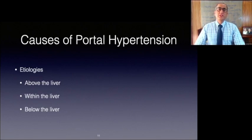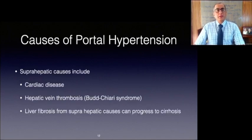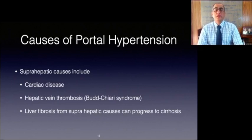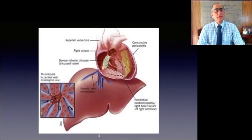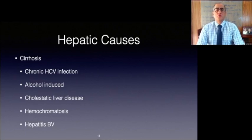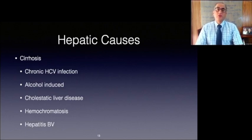There are many causes of portal hypertension including etiologies above the liver, within the liver, and below the liver. Suprahepatic abnormalities include cardiac disease, hepatic vein etiology, and inferior vena cava thrombosis or webs. Hepatic vein thrombosis, or Budd-Chiari syndrome, has multiple etiologies but is generally related to a hypercoagulable state and often treatable with anticoagulation. Liver fibrosis can result from suprahepatic disease, and cirrhosis can develop late in the disease course. Cirrhosis is the most common cause of portal hypertension, and chronic viral hepatitis C is the most common cause of this cirrhosis. Alcohol-induced liver disease and cholestatic liver disease are other common causes.